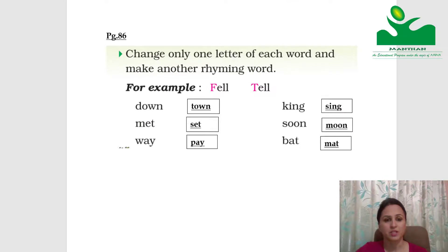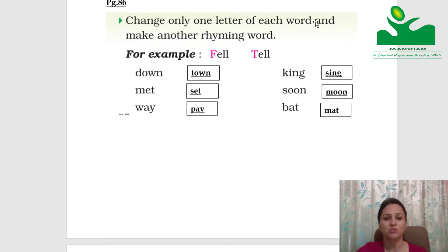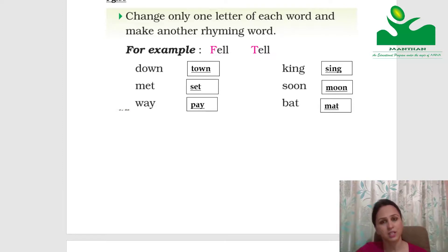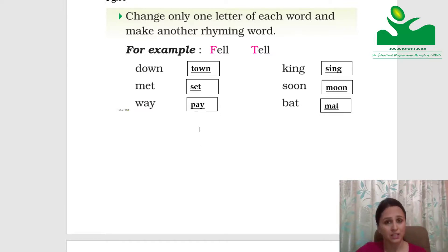On page number 86: change only one letter of each word and make another rhyming word. Answers: down–town, met–set, way–pay, king–sing, soon–moon, bat–mat. You can write your own rhyming words too. You just need to keep the pattern and change one letter.